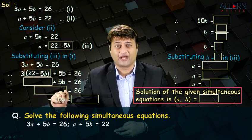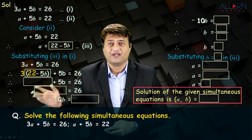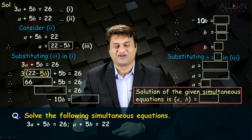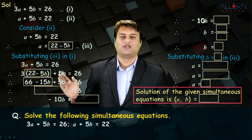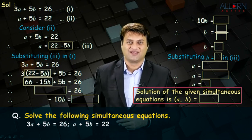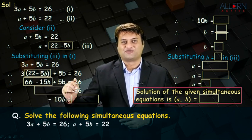Now, let us open the brackets. What do we get? 3 times 22 is 66. 3 into minus 5b is minus 15b. So, 66 minus 15b plus 5b is equal to 26.